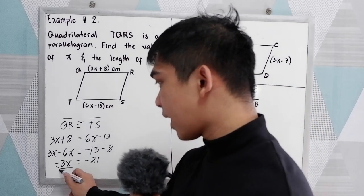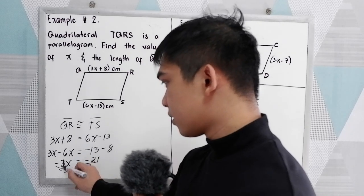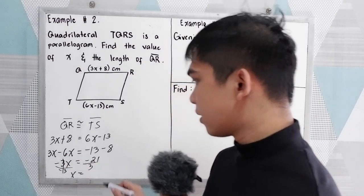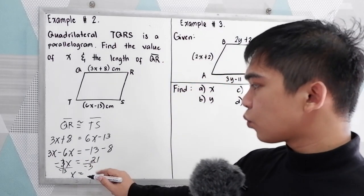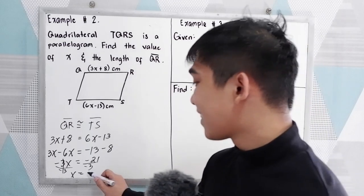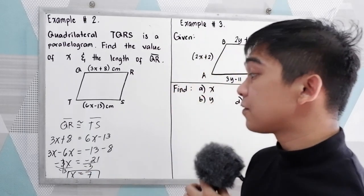Finally to get the value of x, we need to divide by negative 3. So x will be negative 21 divided by negative 3. That is positive 7.